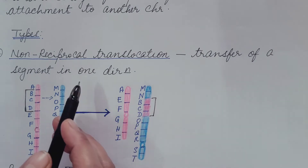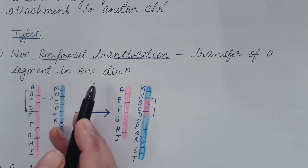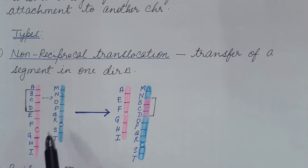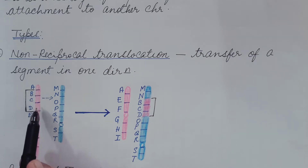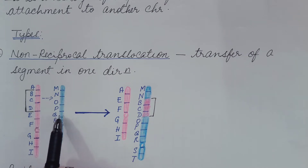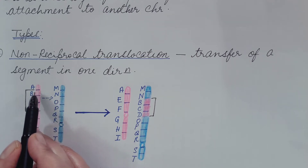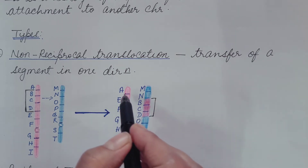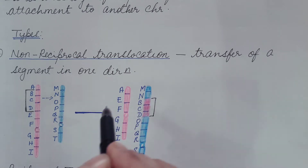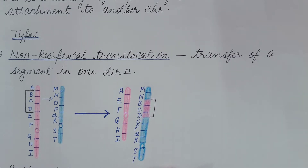Now the types of translocation. The first is non-reciprocal translocation — the transfer of a segment in one direction. Here, from the first chromosome, a segment breaks at two points and is transferred and attaches to the second chromosome. The second chromosome does not lose any segment. So the transfer takes place in only one direction — this is known as non-reciprocal translocation.